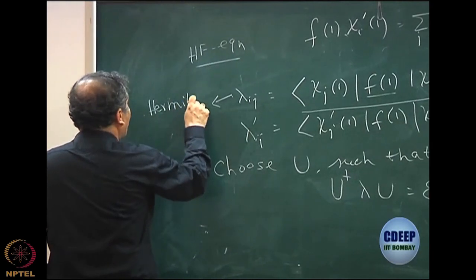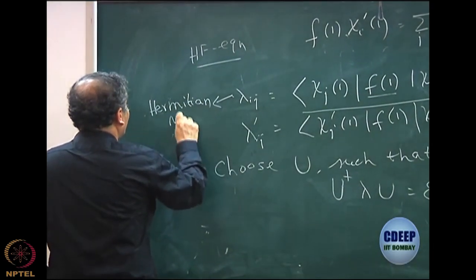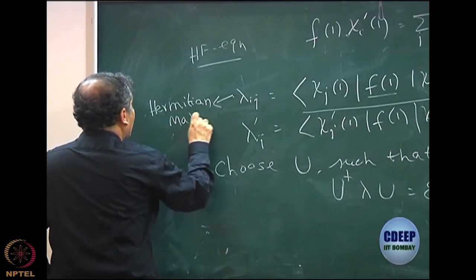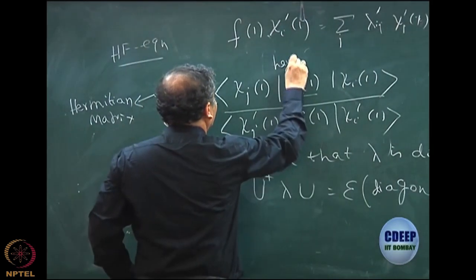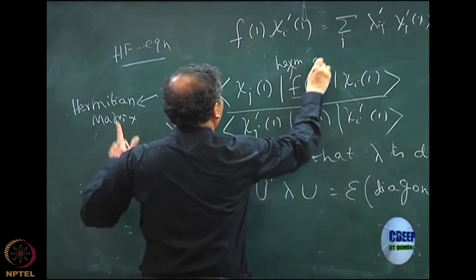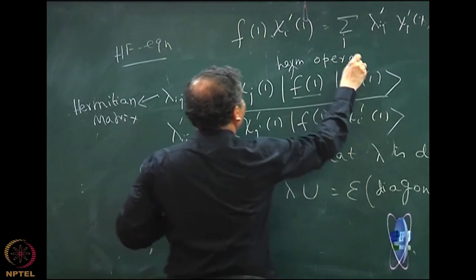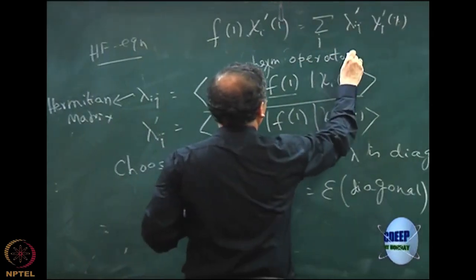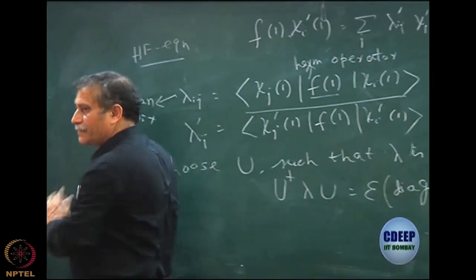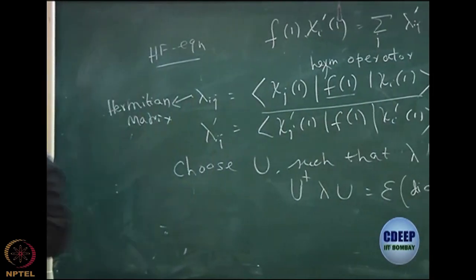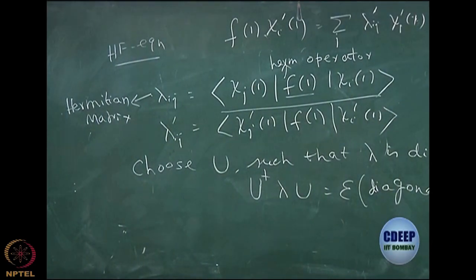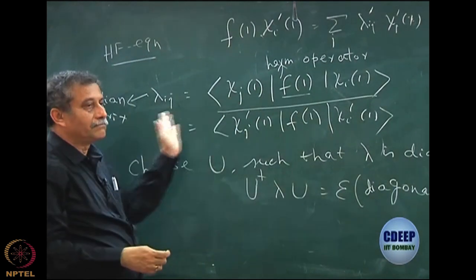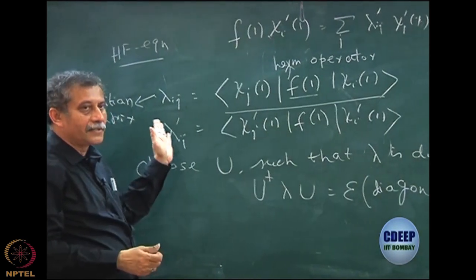This is nothing but a matrix element in an orthonormal basis of a Hermitian operator, and hence this is also a Hermitian matrix. Please note the difference: the Fock operator is a Hermitian operator, while lambda is a Hermitian matrix — because these are numbers arranged in rows and columns.